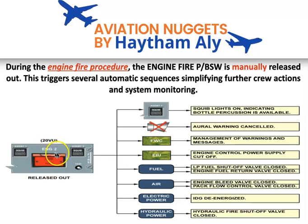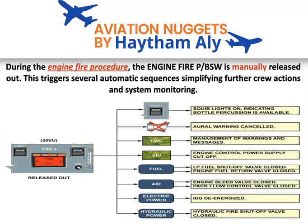The squib light comes on at the agent push button. When you release this push button, agent one and agent two will have squib lights illuminated. The squib light on indicates bottle percussion is available. So only when you release the fire push button will bottle percussion — or agent percussion — be ready.